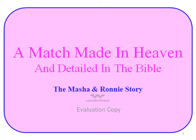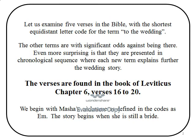A Match Made in Heaven and Detailed in the Bible: The Masha and Roni Story. Let us examine five verses in the Bible with the shortest equidistant letter code for the term 'to the wedding.' The other terms are present with significant odds against being there. Even more surprising, they are presented in chronological sequence where each new term explains further the wedding story. The verses are found in the book of Leviticus, chapter 6, verses 16 to 20.